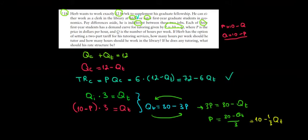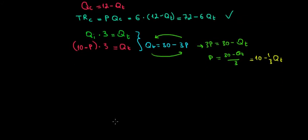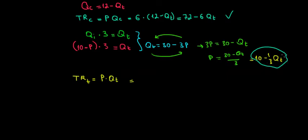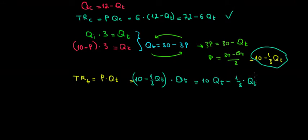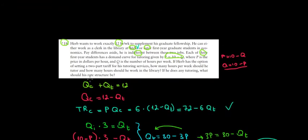Total revenue from tutoring is price times quantity supplied. The market price is 10 - (1/3)·QT, so total revenue from tutoring is (10 - (1/3)·QT)·QT = 10·QT - (1/3)·QT². That's the total revenue from tutoring alone. But recall we also have the option to set a two-part tariff.